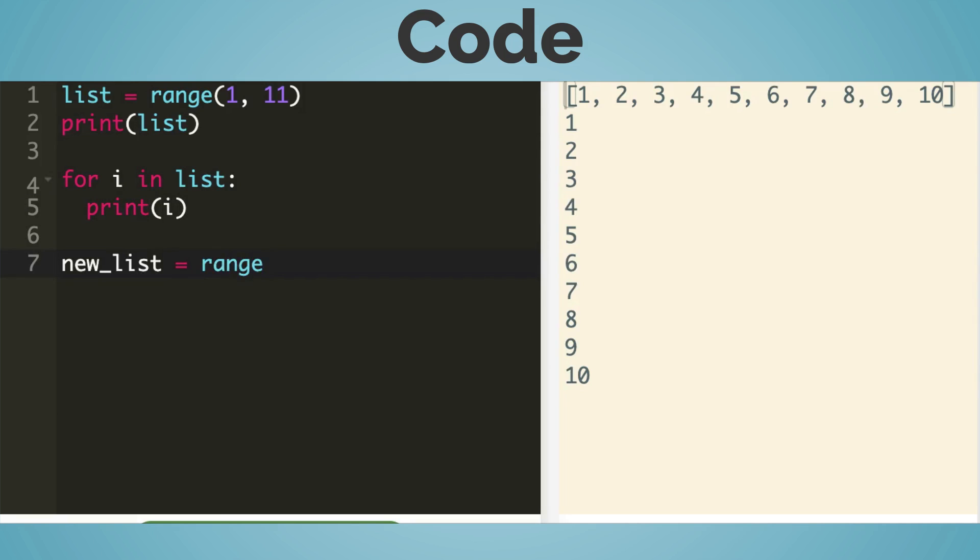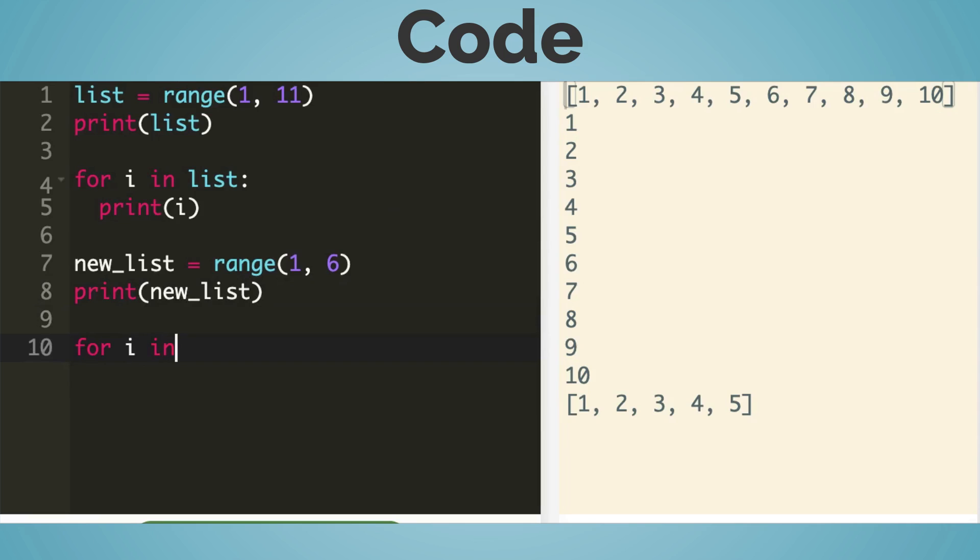New list equal range 1 to 6. Print new underscore list. Oh, I got 1 to 5 in the output. For i in new list.